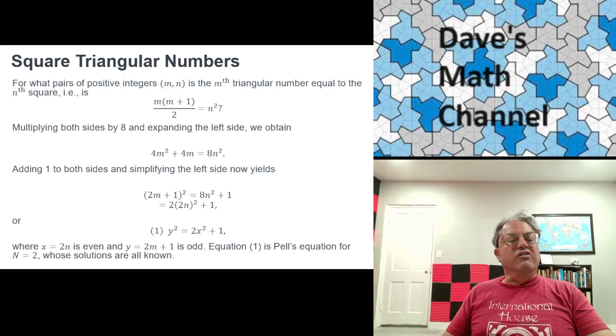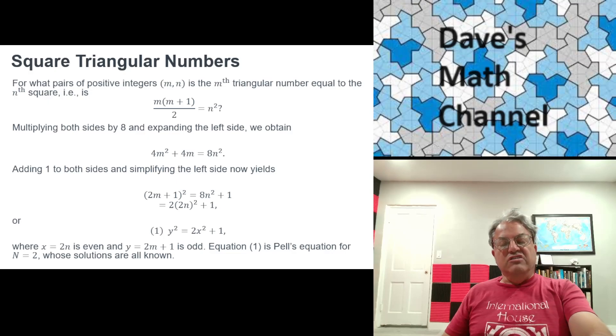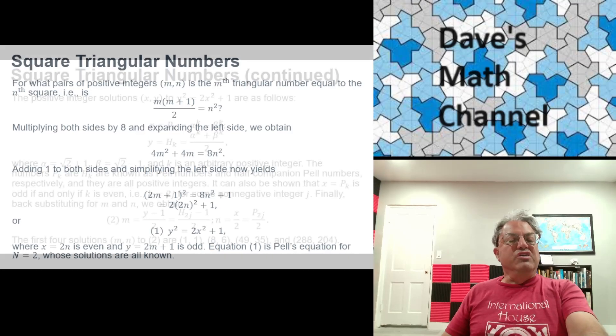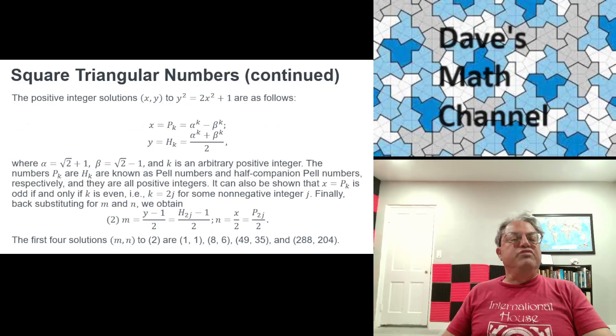Where now x comma y is a solution to the Pell's equation with n equals 2. But it's not just any solution. We want x to be even. It turns out y has to be odd. That's pretty easy to see. Y is an even number plus 1 for every integer value of x. But we're also requiring that x is even. So that kind of limits our solutions a little bit.